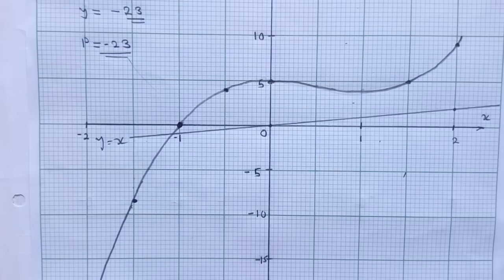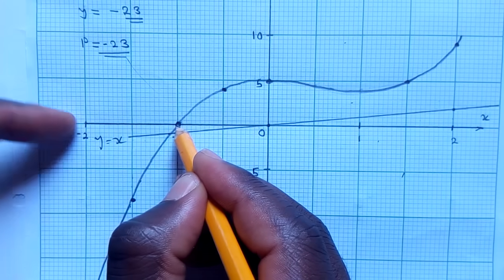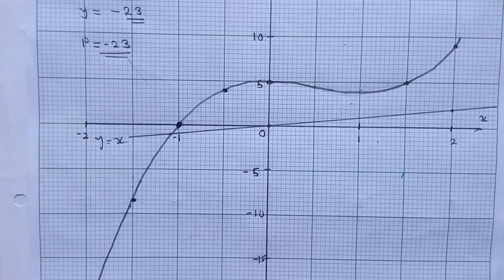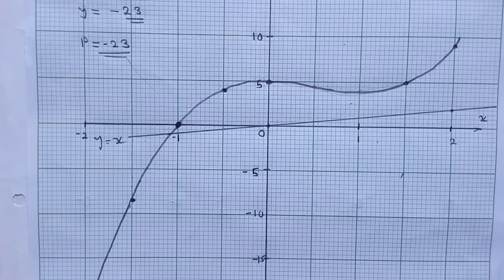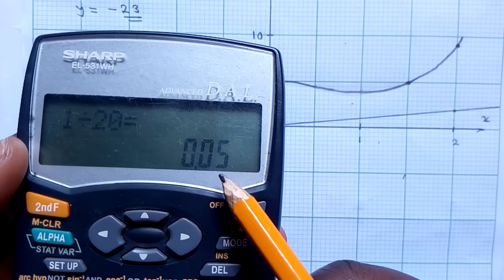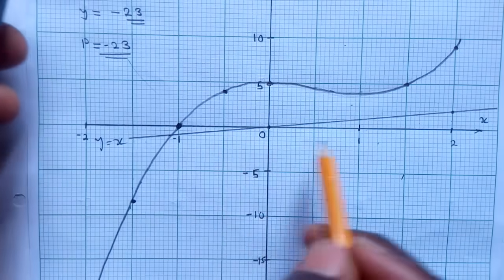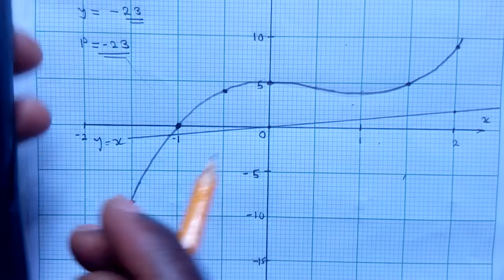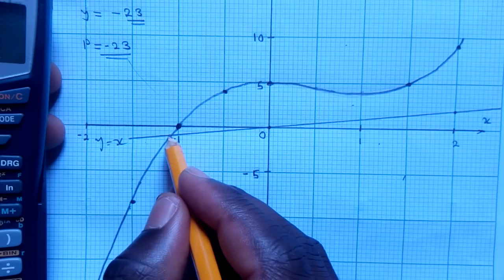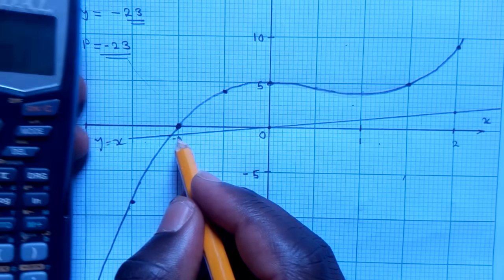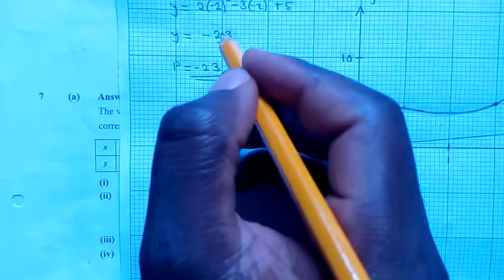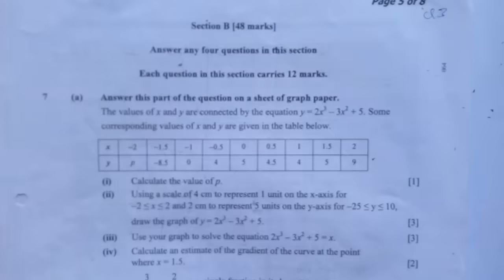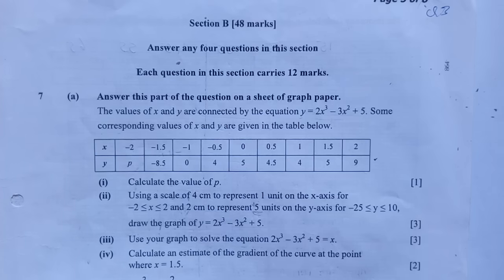Now you check where the line y equals x cuts the graph. It's cutting the graph somewhere here. We know each small line is 0.05, and this is negative 1 — there are 2 small lines here making 0.1. So for question 3, x is equal to negative 1.1. That's the only answer.